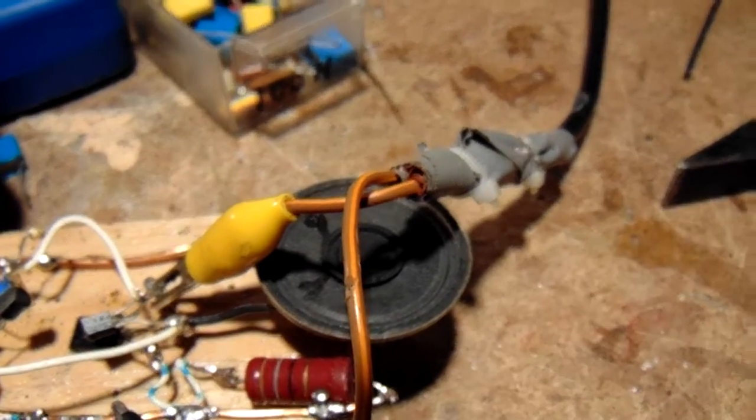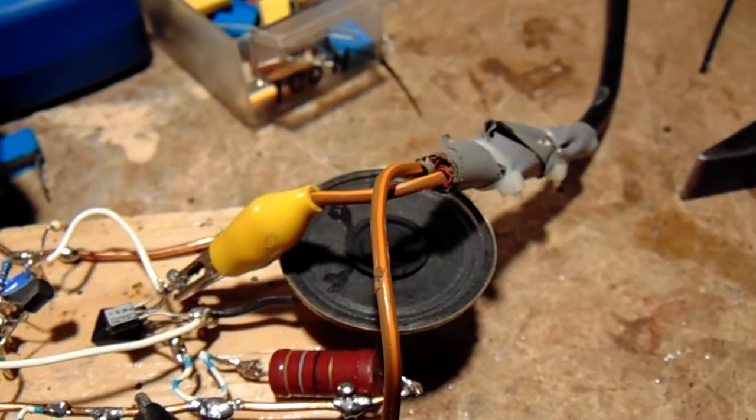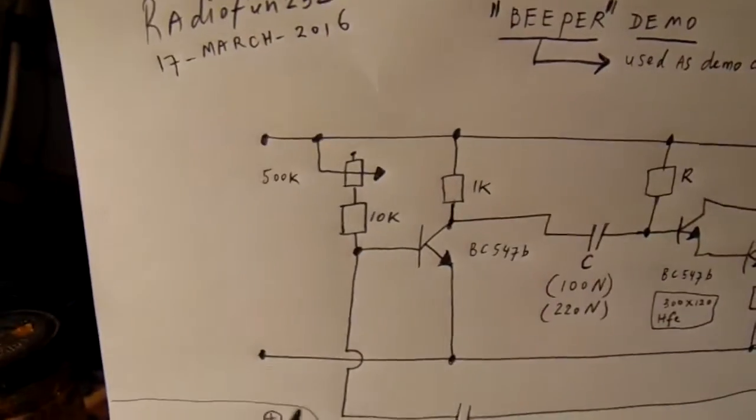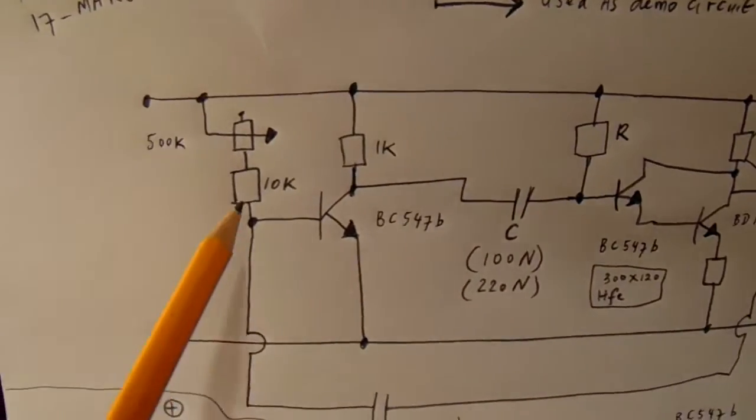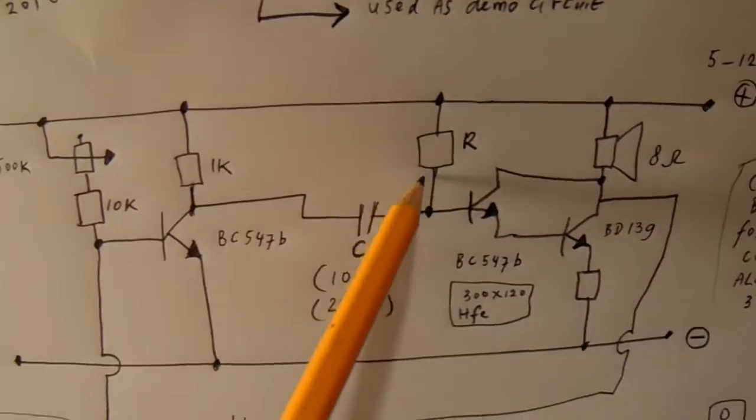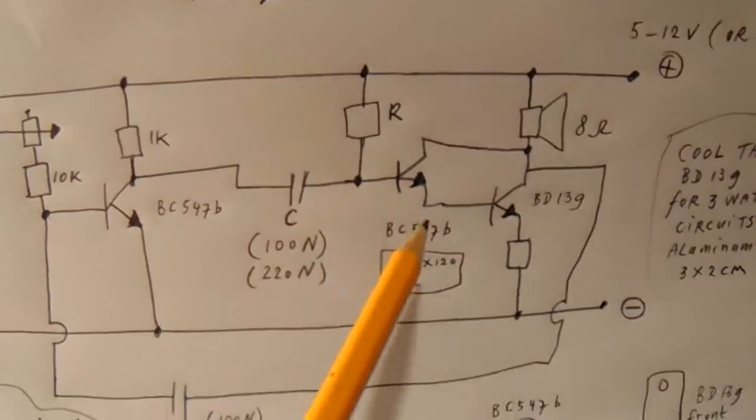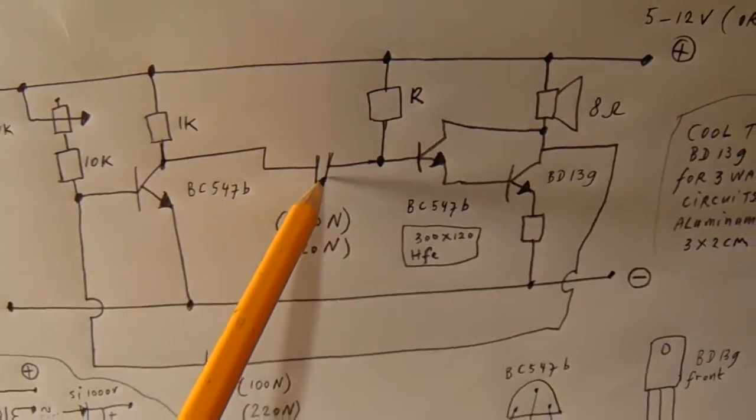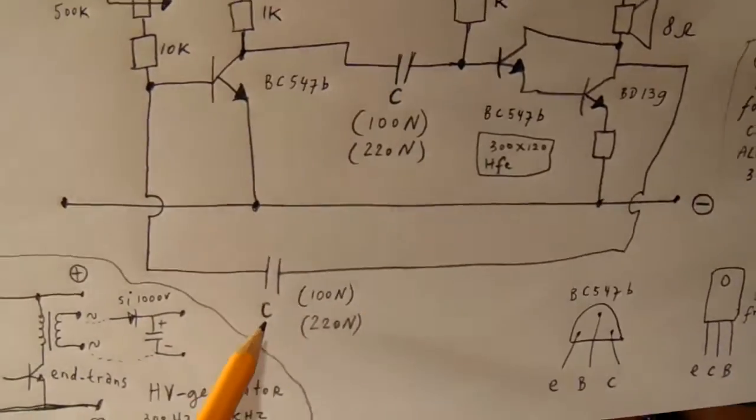And also different frequencies. The frequencies by the way are given by this resistor here and that resistor here, 100k, and the value from these caps. This cap and this cap.